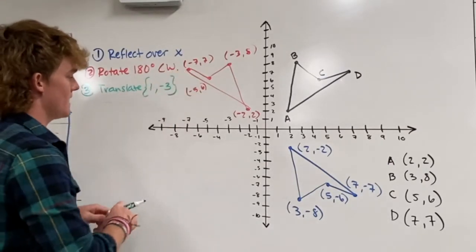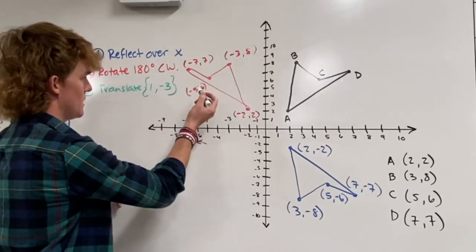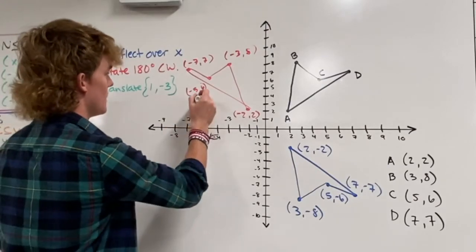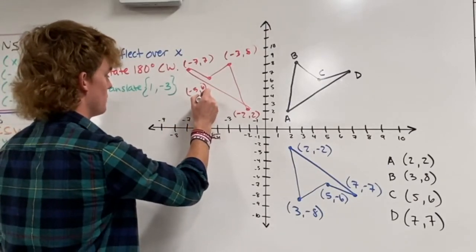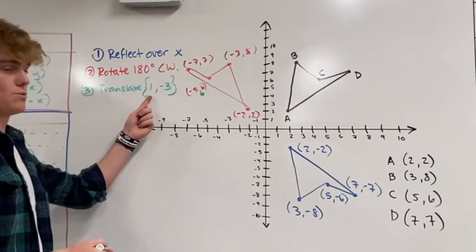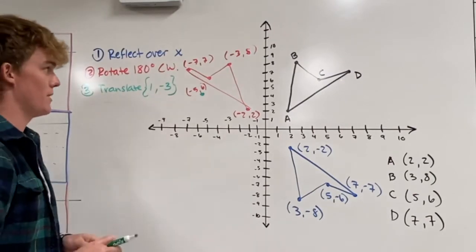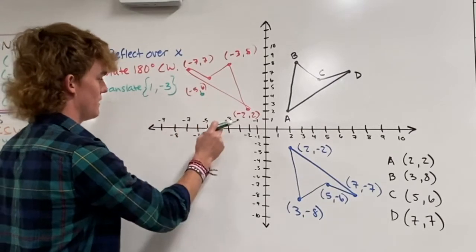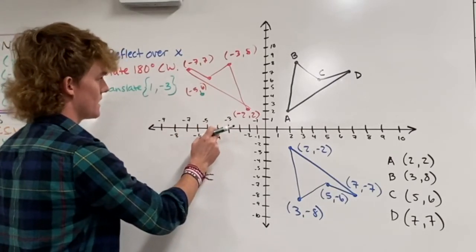So starting with (-7, 7) we'll add 1 to the x, that will make it -6, and then we'll subtract 3 from the y and that will make it -6, positive 4. Basically what this is saying guys, we're going to write 1 down 3. Moving on to this one we'll add 1 to the x, it's -4, subtract 3 from the 6 so we'll have (-4, 3).